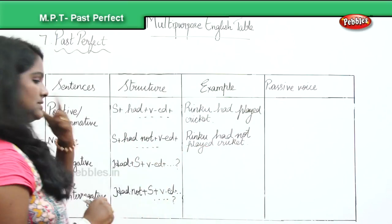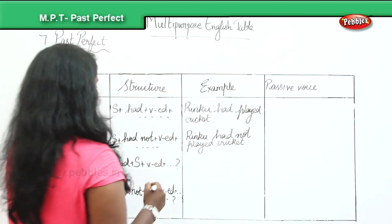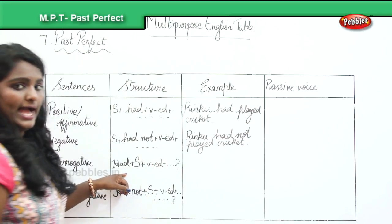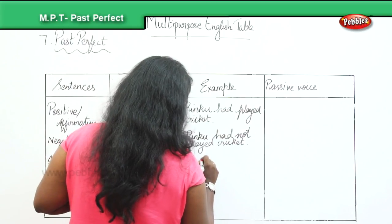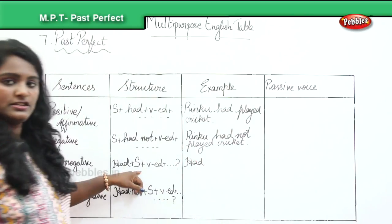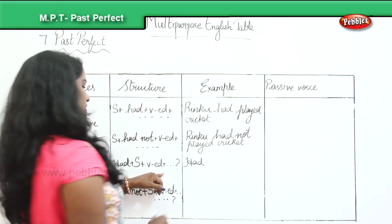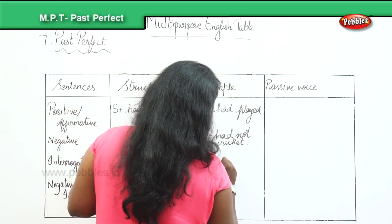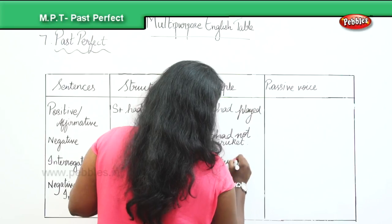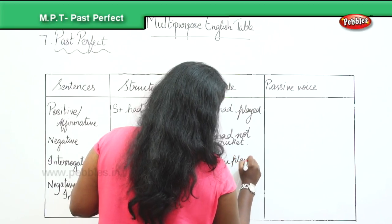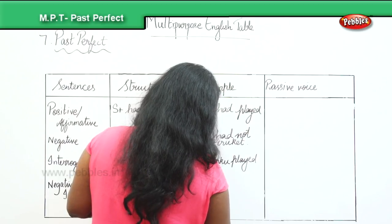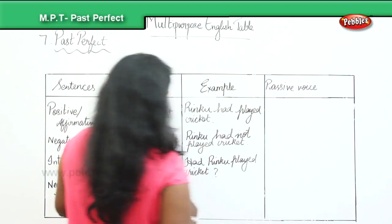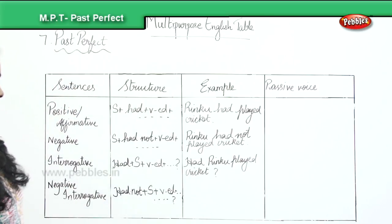Then comes the interrogative sentence — begin with had. Had, then the subject, and then the ed form of the verb: Had Rinku played cricket? Do not forget to put the question mark.